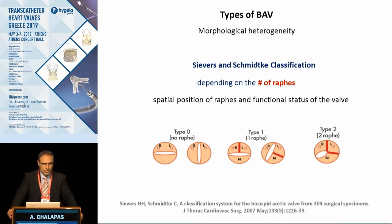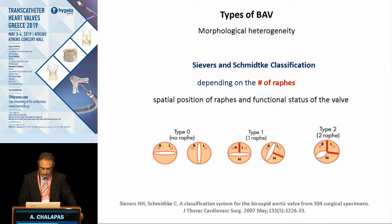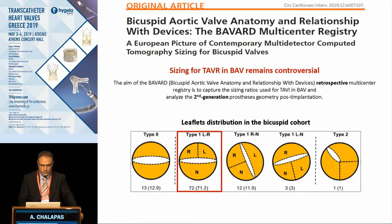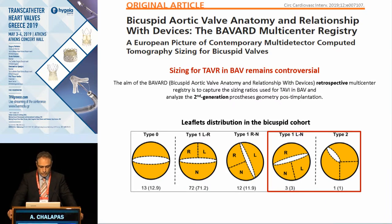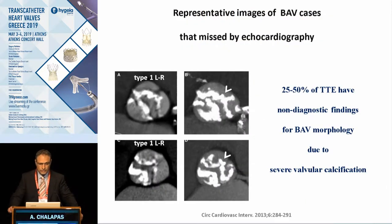Regarding the morphological heterogeneity, there are different classification patterns. The most commonly used is the one from Sievers, which classifies bicuspid valves according to the number of raphe: type 0 with no raphe, type 1 with one raphe, and type 2 with two raphes. Recently it was shown that the most common type is type 1 with left-right fusion, which is often characterized by an asymmetric non-coronary sinus. The less common is type 1 with left and non-coronary fusion at 3% of cases, and type 2 with two raphes at 1% of cases.